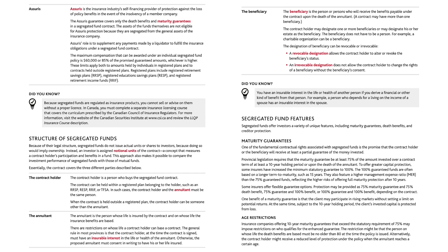Some insurers offer flexible guarantee options. Protection may be provided as 75% maturity guarantee and 75% death benefit, 75% guarantee and 100% benefit, or 100% guarantee and 100% benefit, depending on the contract. One benefit of a maturity guarantee is that the client may participate in rising markets without setting a limit on potential returns. At the same time, subject to the 10-year holding period, the client's invested capital is protected from loss.